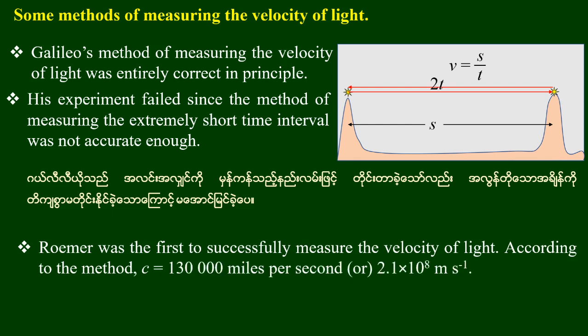This was the first to successfully measure the velocity of light according to the method. C is equal to 130,000 miles per second, or 2.182 times 10 to the power 8 meters per second.